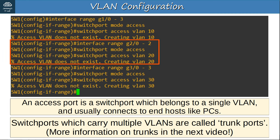Next, I again used the INTERFACE RANGE command to configure all of the VLAN 20 interfaces at once. I used the same SWITCHPORT MODE ACCESS command, then SWITCHPORT ACCESS VLAN 20 to assign the interfaces to VLAN 20. Finally, I did the same for VLAN 30, and once again the VLAN was created automatically.